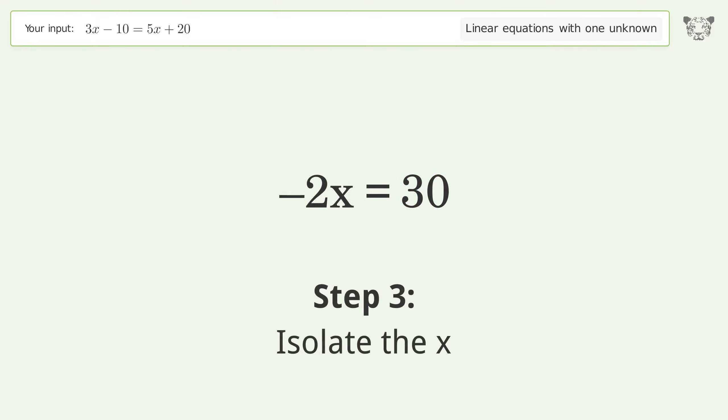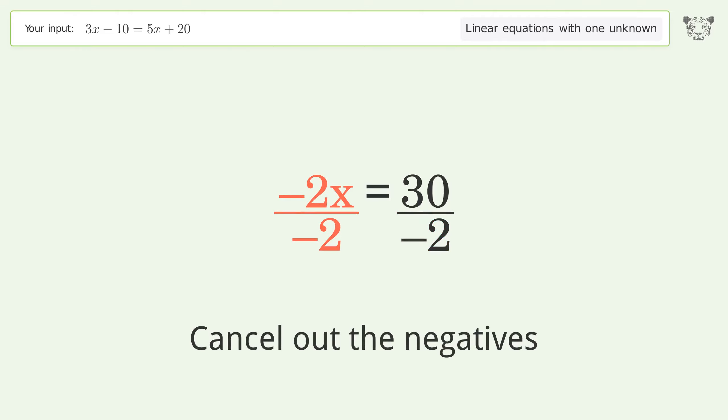Isolate the x. Divide both sides by negative 2. Cancel out the negatives. Simplify the fraction.